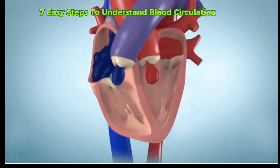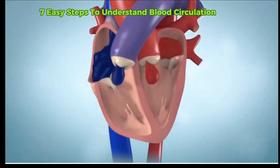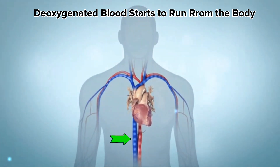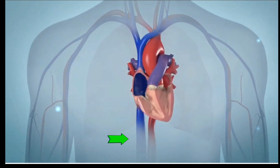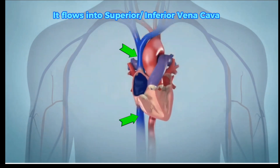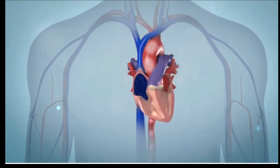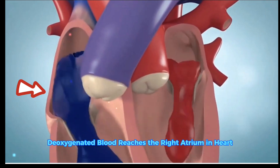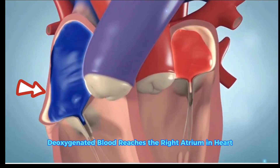There are seven easy steps to understand blood circulation. Number one: deoxygenated blood starts to run from the body. It flows into the superior and inferior vena cava, and this deoxygenated blood reaches the right atrium in the heart.